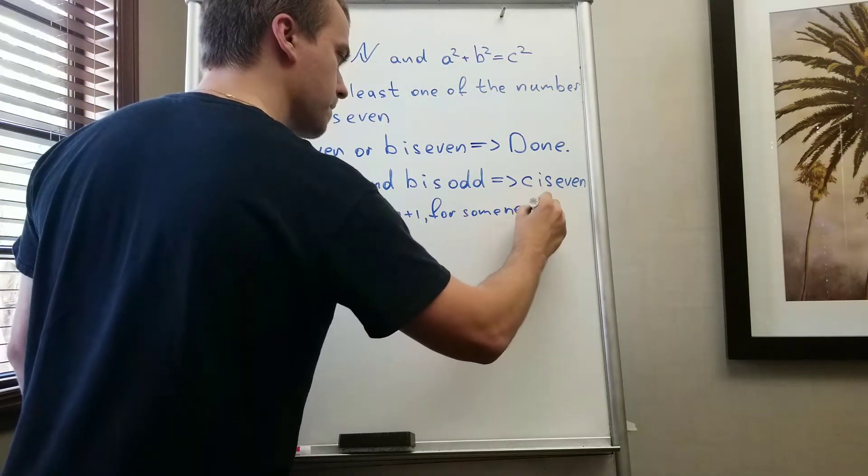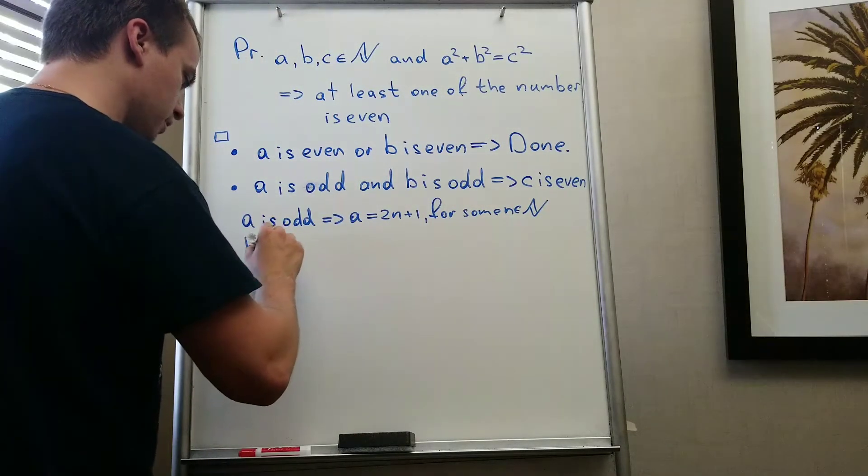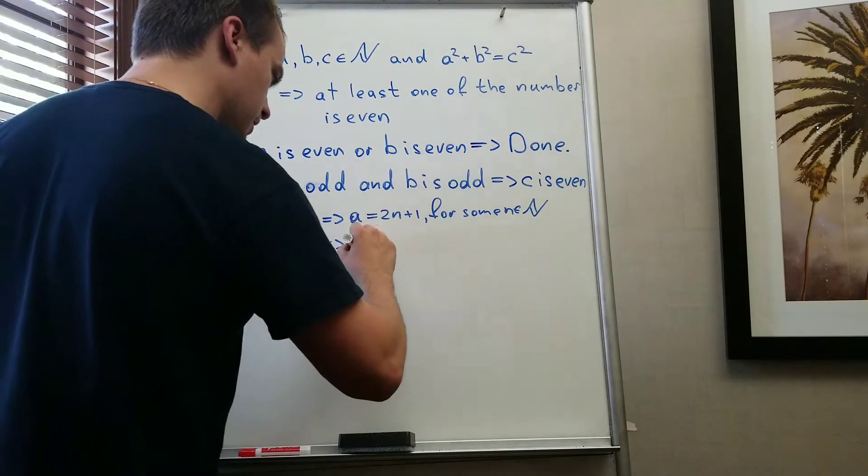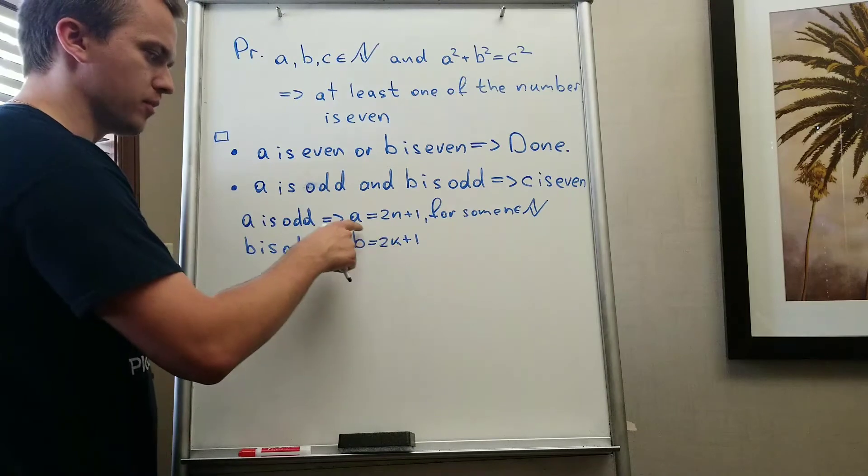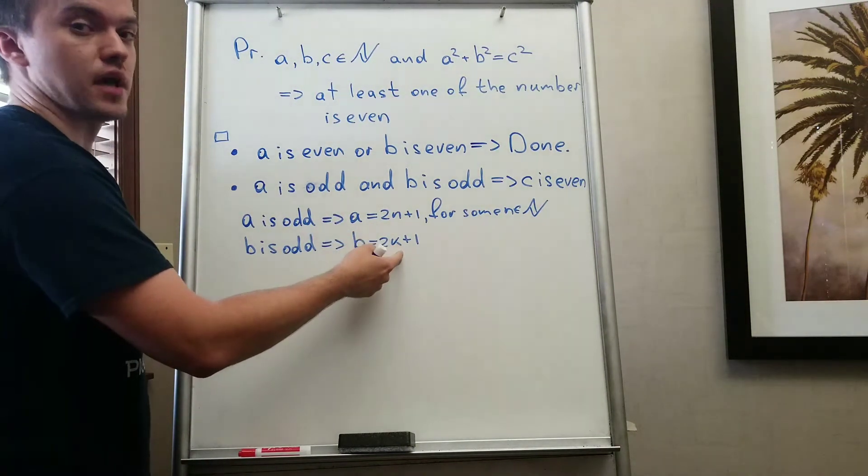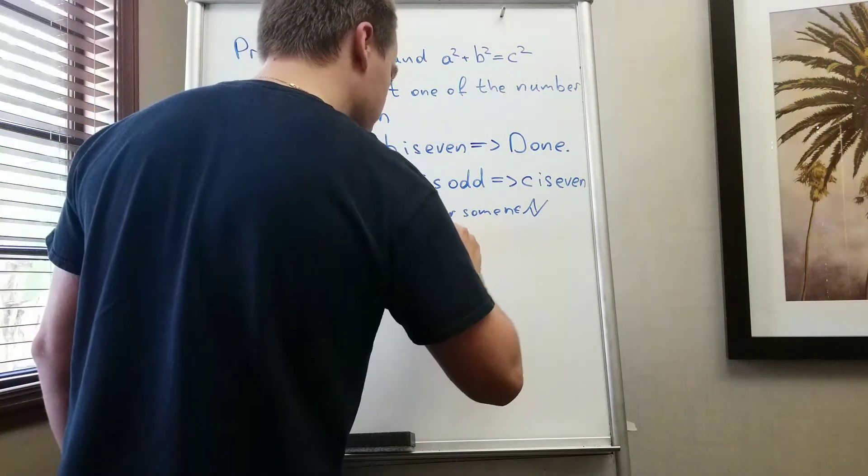In the same way I can say b is odd, that b equals 2k plus 1. And why 2k plus 1? Because the numbers are not the same, so they should be different. If k equals n, it means the number is going to be the same, also for some